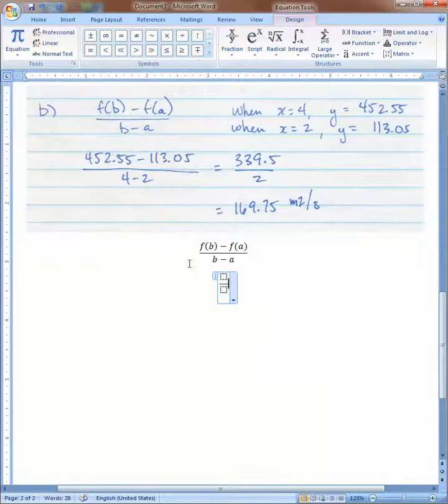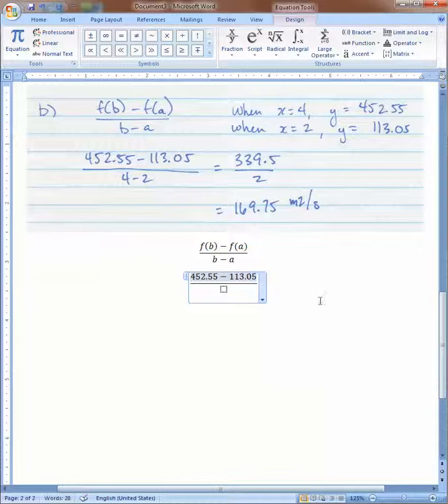Fraction again. Click on the top. 452.55. I just figured these out on the calculator. On the bottom, 4 minus 2.